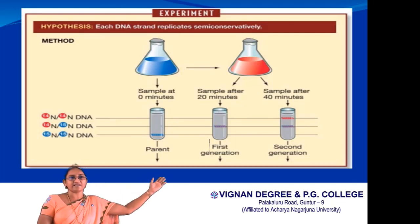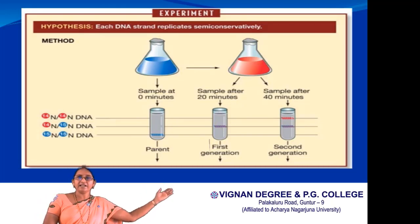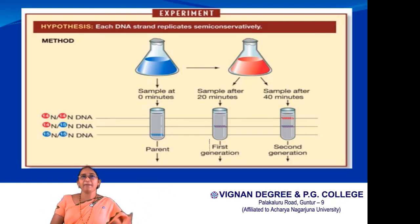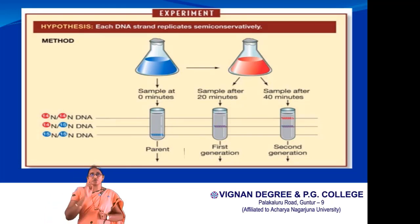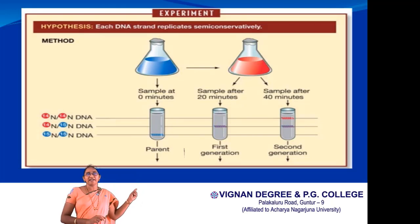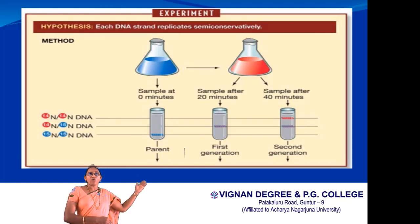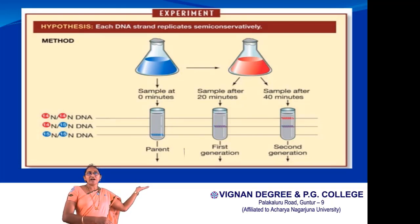After transferring the culture to the second flask — indicated in red — containing the lightly-labelled nitrogen-14 nutrient broth, samples were collected every 20 minutes, where 20 minutes represents one complete replication cycle. At zero time, the DNA was initially fully heavy-labelled. After 20 minutes of growth (first generation), cells were broken, DNA was collected, and subjected to density gradient centrifugation. They found that the band formed in the middle of the tube — a hybrid DNA — indicating the DNA molecules contained one original strand and one new daughter strand.